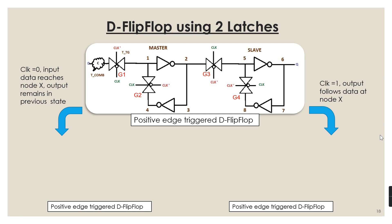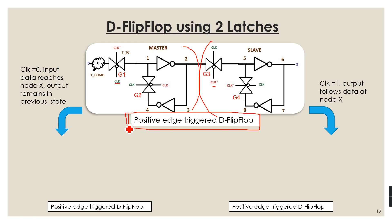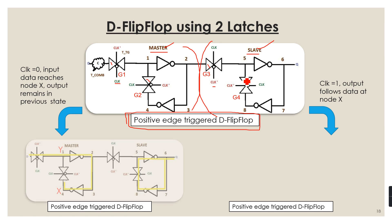Now we are ready to make a flip-flop. A negative level-sensitive D latch has clock applied to the bubble input, and a positive level-sensitive D latch has clock-bar applied to the bubble input. Joining a negative level-sensitive D latch followed by a positive level-sensitive D latch creates a positive edge-triggered D flip-flop. This configuration is also known as the master-slave configuration — the first part is the master and the second is the slave. It has 4 transmission gates: 1, 2, 3, and 4.